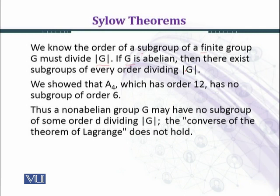As an example, we consider A4, the alternating group, which consists of all even permutations of S4, the symmetric group. The order of S4 is 4 factorial, which is 24 elements, and the order of A4 is 24 divided by 2, giving 12 elements.